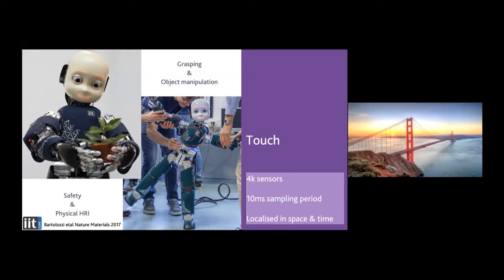So how can we improve this? One way could be to use inspiration from how nature solves a very similar problem. We also have a large skin with a lot of sensors, but our system has devised ways to optimize transferring information about contact in a way that doesn't overload our system.